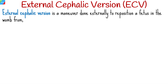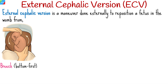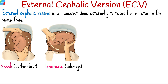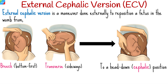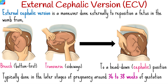External cephalic version is a maneuver done externally to reposition a fetus in the womb from a breech or bottom-first position and transverse or sideways position to a head-down, or cephalic, position. This intervention is typically carried out in the later stages of pregnancy, usually around 36–38 weeks gestation, when the baby's size and amniotic fluid levels are still conducive to manipulation.